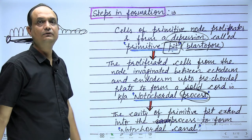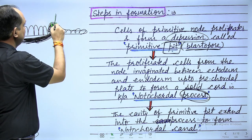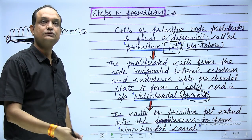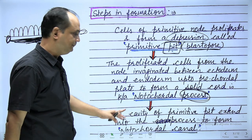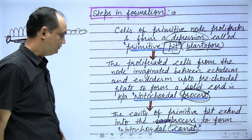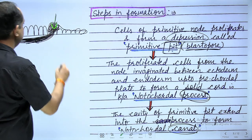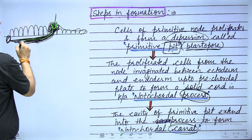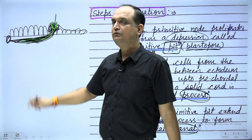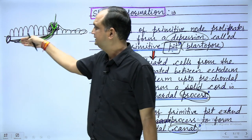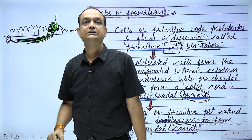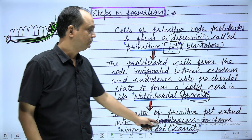In the next step, the depression (primitive pit) deepens into the notochordal process, forming a canal inside it. This canal is known as the notochordal canal. The notochordal process is now canalized by the pit, and the new canal formed inside is the notochordal canal.